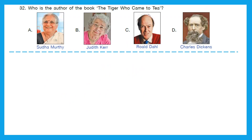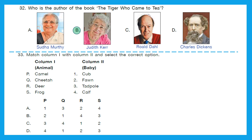Question 32: Who is the author of the book 'The Tiger Who Came to Tea'? Is it Sudha Murthy, Judith Kerr, Roald Dahl or Charles Dickens? The right answer is option B, Judith Kerr. Question 33: Match column 1 with column 2 — animals with their young ones. The little one of a camel is called a calf, so P matches 4. The little one of a cheetah is called a cub, so Q matches 1. The little one of a deer is called a fawn, so R matches 2. The little one of a frog is called a tadpole, so S matches 3. The option having P4, Q1, R2 and S3 is option D — option D is the right answer.